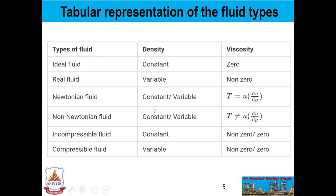This is a tabular representation of fluid types: ideal fluid, real fluid, non-Newtonian, Newtonian, incompressible, and compressible fluids. In the case of ideal fluid, density is constant. In case of real fluid, it is variable. Non-Newtonian fluid density can be constant or variable — it depends on the type of fluid. In compressible fluid, density is variable, while in incompressible fluid density is constant — that is why it is called incompressible.